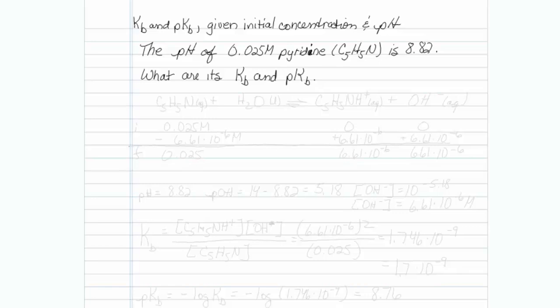Let's write the definition reaction for which kB applies. That would be C5H5N, which is our base, reacting with water to produce a protonated form of the base and hydroxide. And these materials are of course aqueous, except for water, which is in the liquid state.